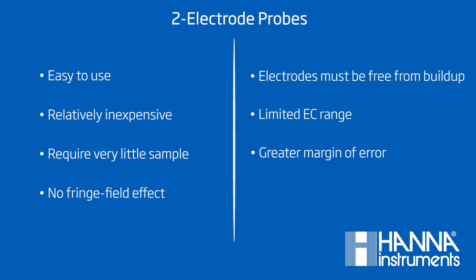So why would you choose one probe over another? What are the upsides or downsides to the technology? Let's go through that now. Two-electrode probes are easy to use, relatively inexpensive, require very little sample to get an accurate reading, and you don't have to worry about the fringe field effect. Don't worry, we'll go over what that is in a bit.